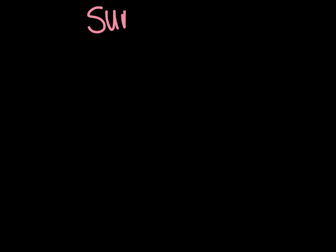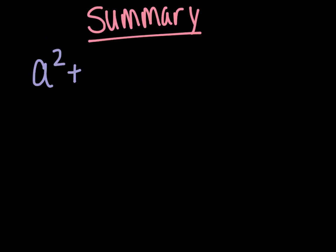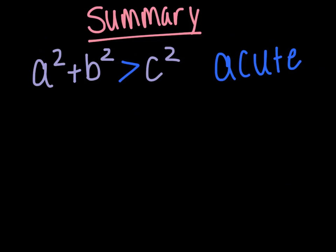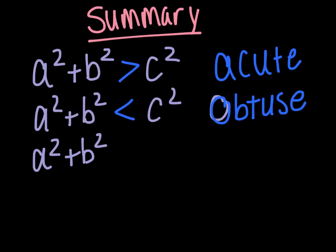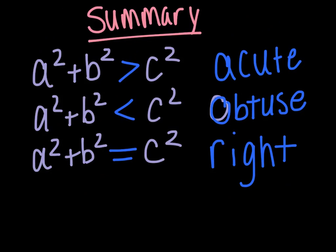Before you go on to the practice problems in the next folder, let's summarize. If A squared plus B squared is greater than C squared, an acute triangle results. If A squared plus B squared is less than C squared, an obtuse triangle results. And if A squared plus B squared equals C squared, a right triangle results. Make sure you have these notes with you as you go through the practice, and see your teacher with any questions.